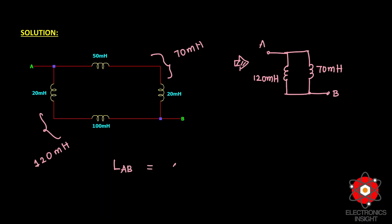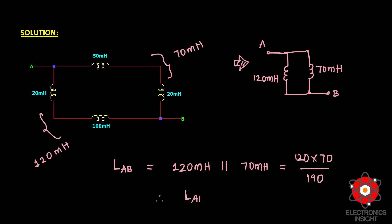The equivalent inductance across nodes A and B is 120 mH in parallel with 70 mH: (120 × 70) / 190 = 44.21 millihenry. This is the final equivalent inductance for this circuit.